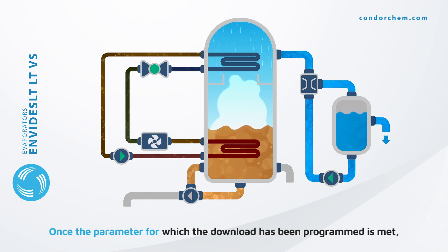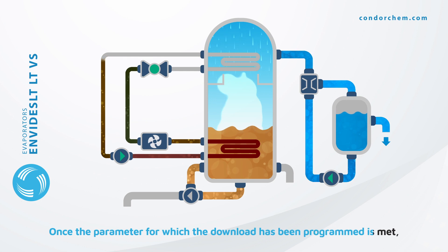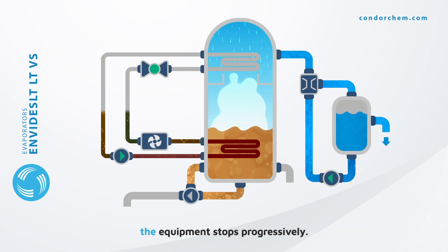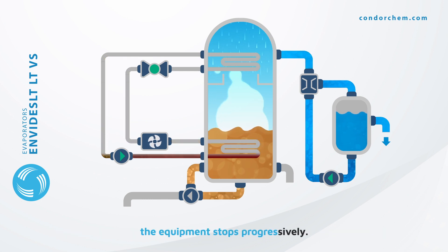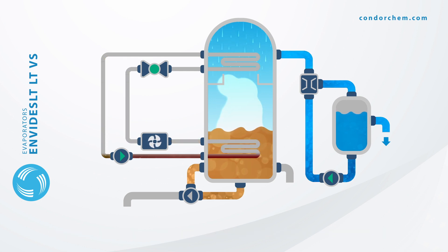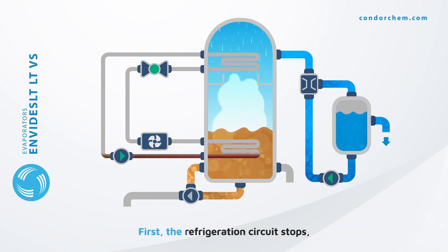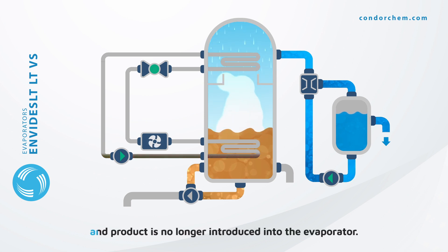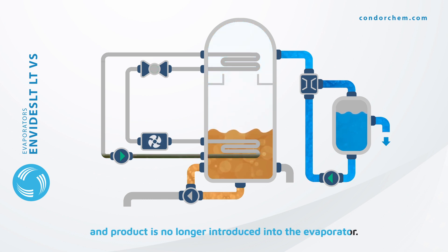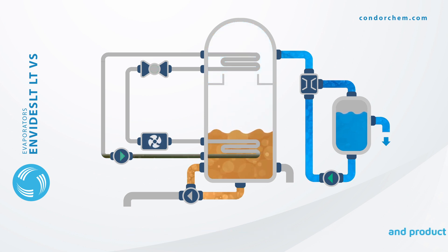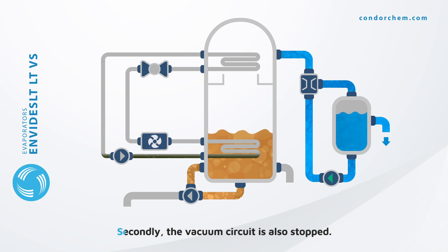Once the parameter for which the download has been programmed is met, the equipment stops progressively. First, the refrigeration circuit stops and the product is no longer introduced into the evaporator. Secondly, the vacuum circuit is also stopped.